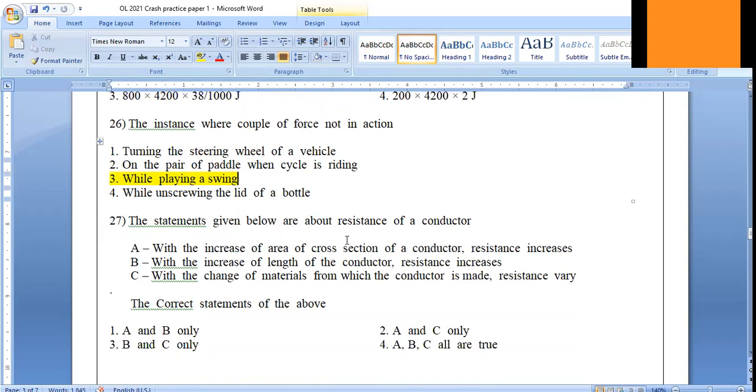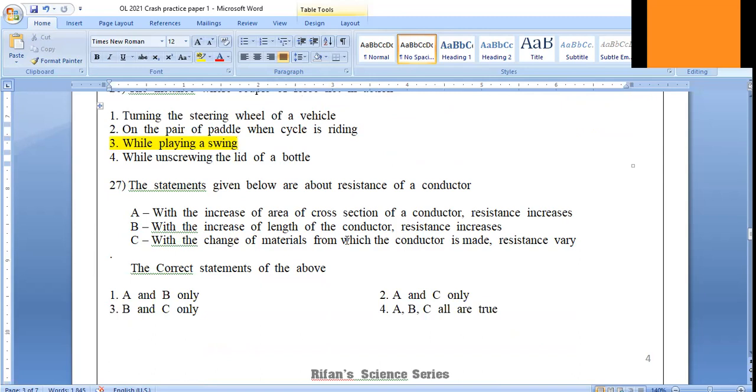Question number 27. I'll tell you how I thought of this question. Statement A: with the increase of area of cross-section of a conductor, resistance decreases. Statement wrong - when area increases, resistance will decrease. If A is wrong, look at the other answers.